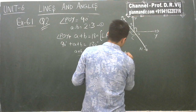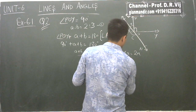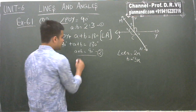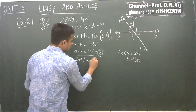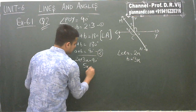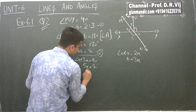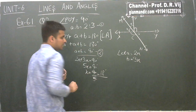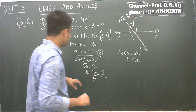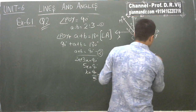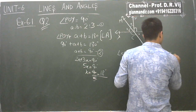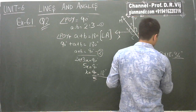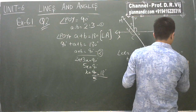Let A equal 2x and B equal 3x. Substituting into A plus B equals 90, it becomes 2x plus 3x equals 90 degrees. Adding them, 5x equals 90, so x equals 90 divided by 5, which comes out to be 18 degrees. Therefore A equals 2 into 18 equals 36 degrees, and B equals 3 into 18 equals 54 degrees.